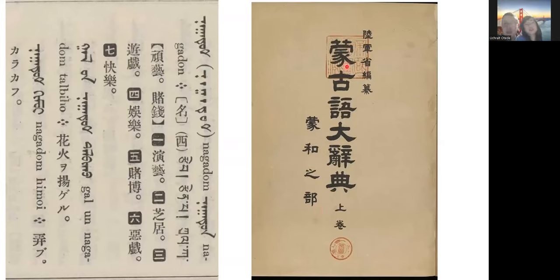The final one I brought is a Mongolian-Japanese dictionary. The reason I included it is because it has a very good feature: it shows the word components, which I think most beginners find confusing.